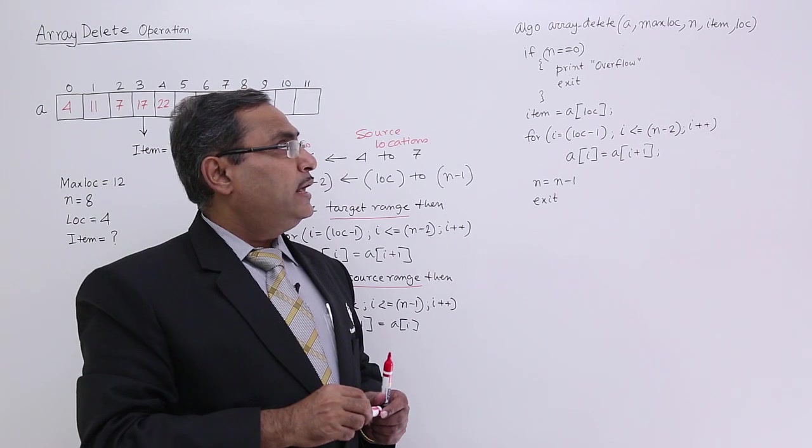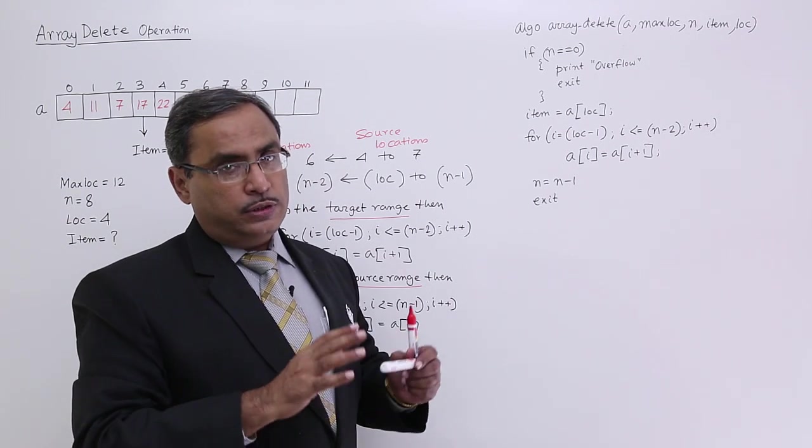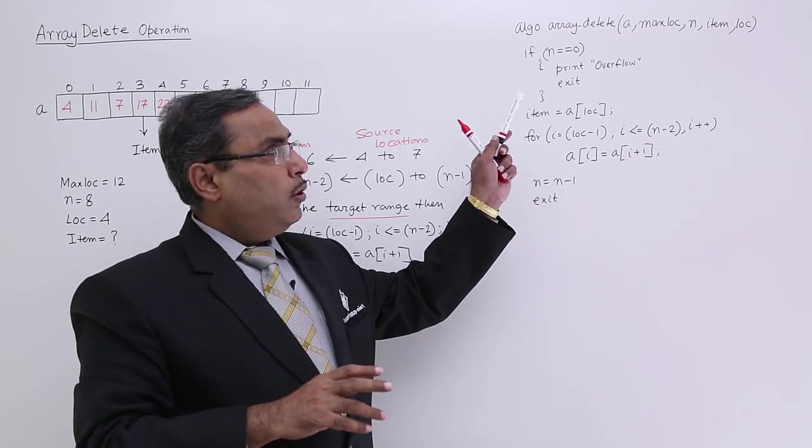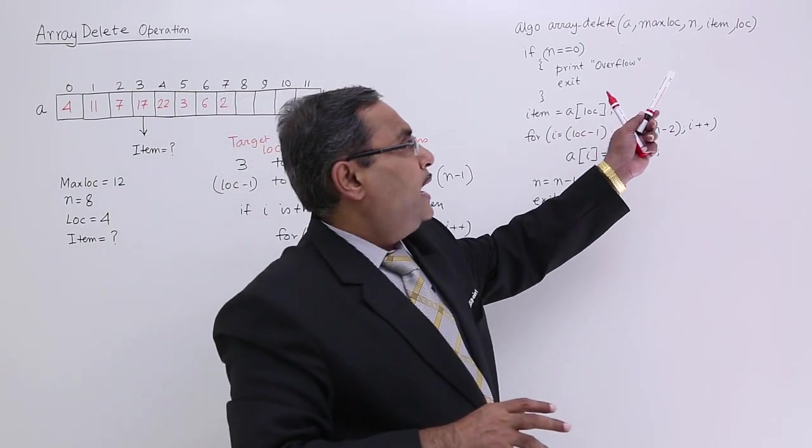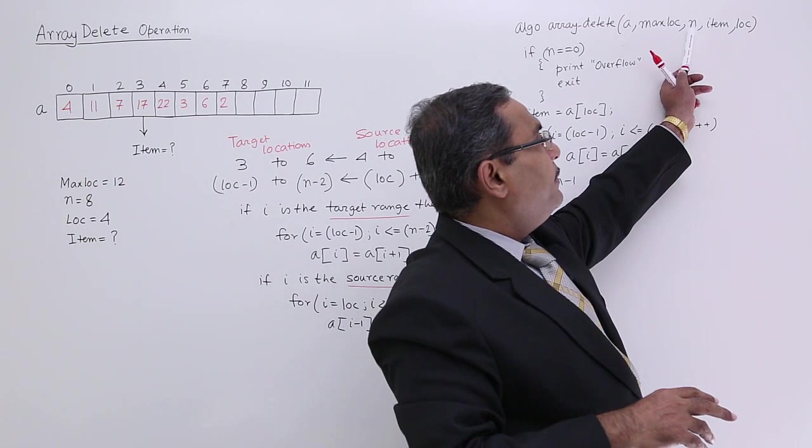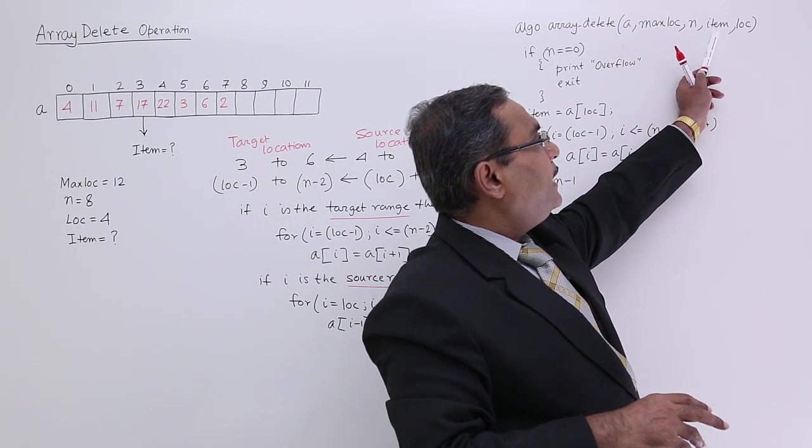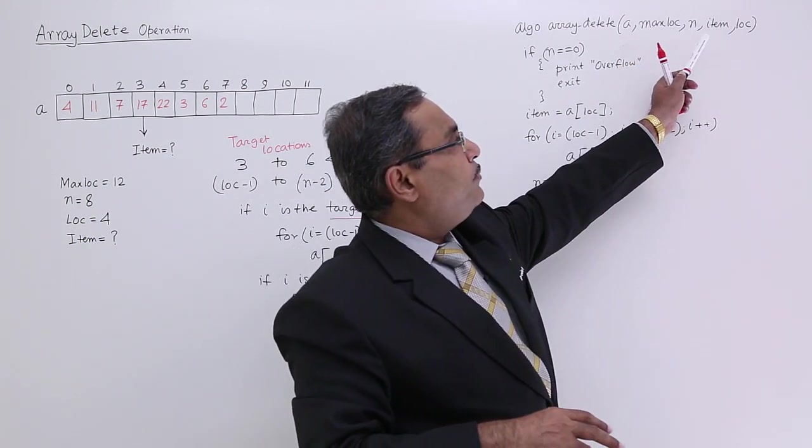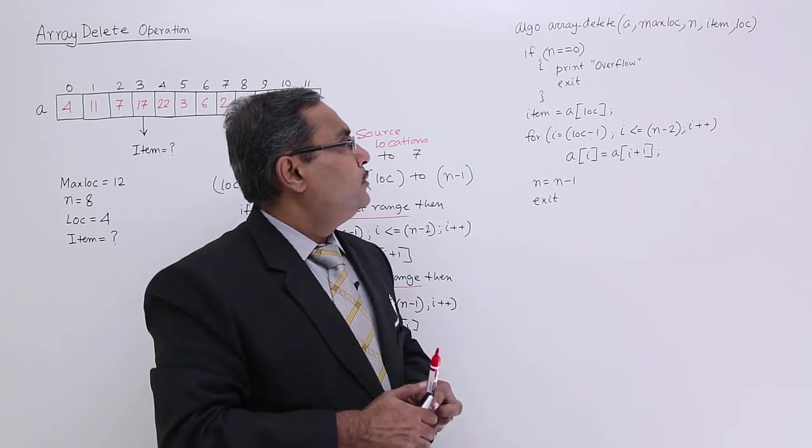So a, max lock, n, item and lock. So these are the input arguments. Out of them, item is the output argument and all of them are input arguments. And this n will be coming in the call by reference and item, n will be coming in the call by reference and this particular item will be coming in the call by reference. Okay.